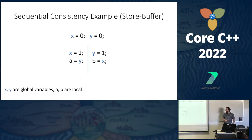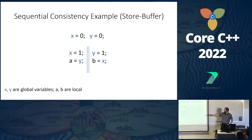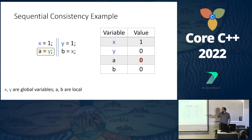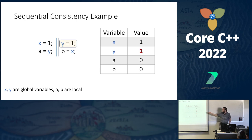This example is called the store buffer. We start with x and y global locations initialized to zero. The first thread writes 1 to x and reads y; the other thread writes 1 to y and reads x. One possible execution: write 1 to x, then read y — we read zero because nothing changed yet. Then the other thread writes 1 to y, and when we read x into b, we read 1.